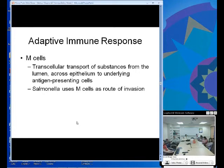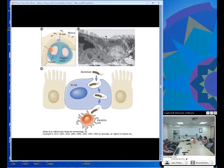M cells are a component of the GI tract responsible for the transcellular transport of substances from the lumen across the epithelium to the underlying immune system. Incidentally, Salmonella uses M cells as a route of invasion. This is a picture of an M cell and the pathogens that would be transported across into the Peyer's patch.